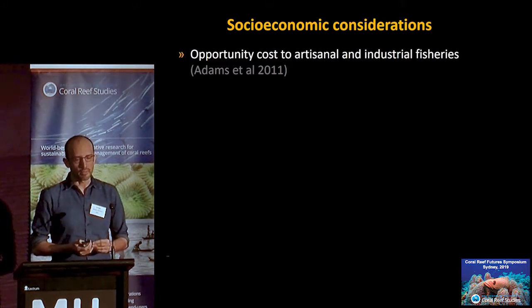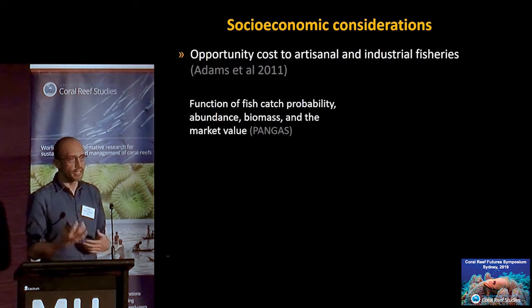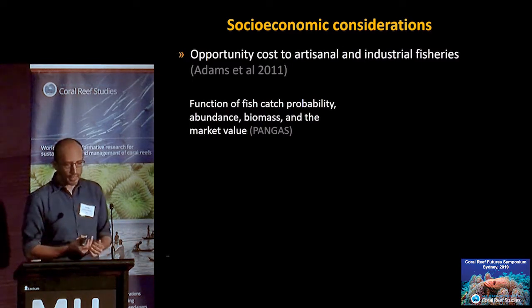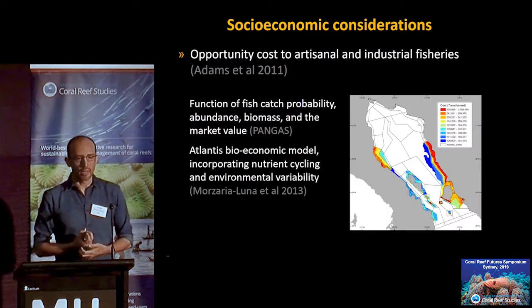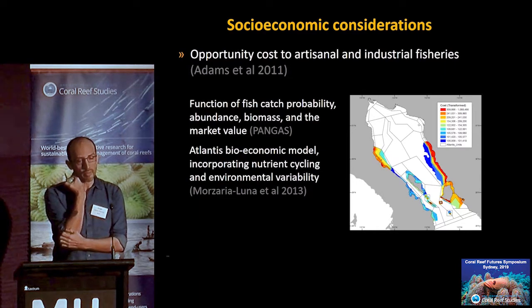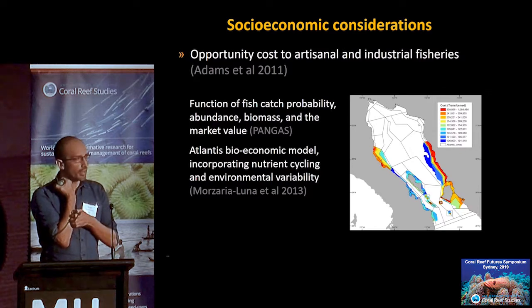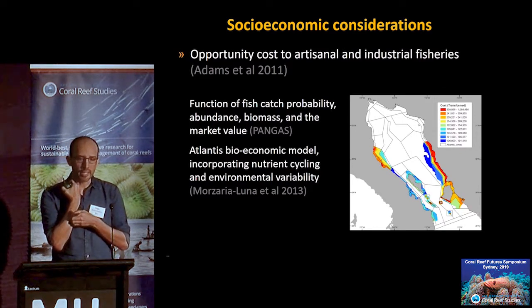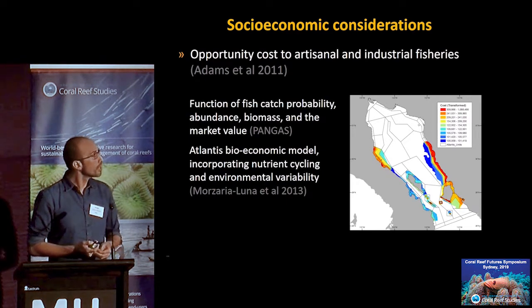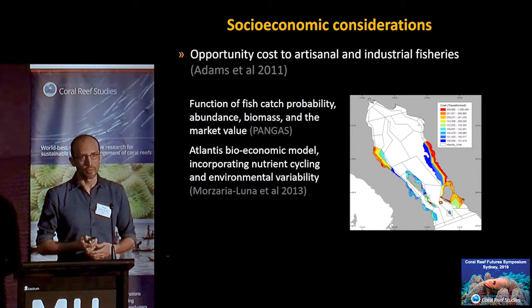We followed models based on how much fish there is, how easy it is to fish them, what the biomass is, and what the market value is. We used a bioeconomic model originally developed in Australia, parameterized for the northern Gulf of California, to incorporate biophysical and economic aspects and estimate how important different areas across the seascape are for fishing, combining this into a single index of opportunity cost.